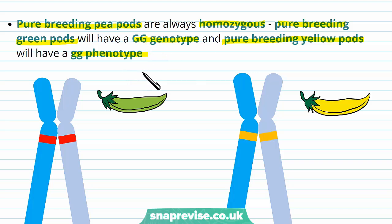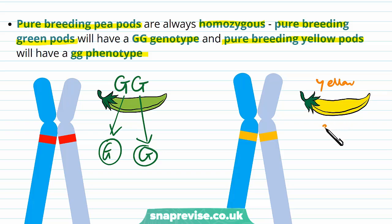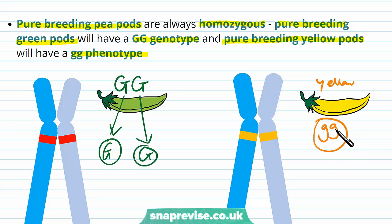As Mendel did, he bred lots and lots of generations of green ones together until eventually they only had the green gene, so any of their offspring will always get one of those alleles. And the pure-breed yellow ones will have little g, little g, hence why they're yellow, and so they have no dominant green alleles in their genetic makeup.